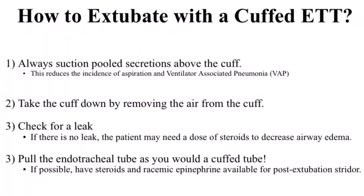How to extubate with a cuffed endotracheal tube: always suction pooled secretions above the cuff — this reduces the incidence of aspiration and ventilator-associated pneumonia. Take down the cuff by removing the air from the cuff. Check for a leak; if there is no leak, the patient may need a dose of steroids to decrease airway edema. Pull the endotracheal tube as you would an uncuffed tube. If possible, have steroids and racemic epinephrine available for post-extubation stridor.